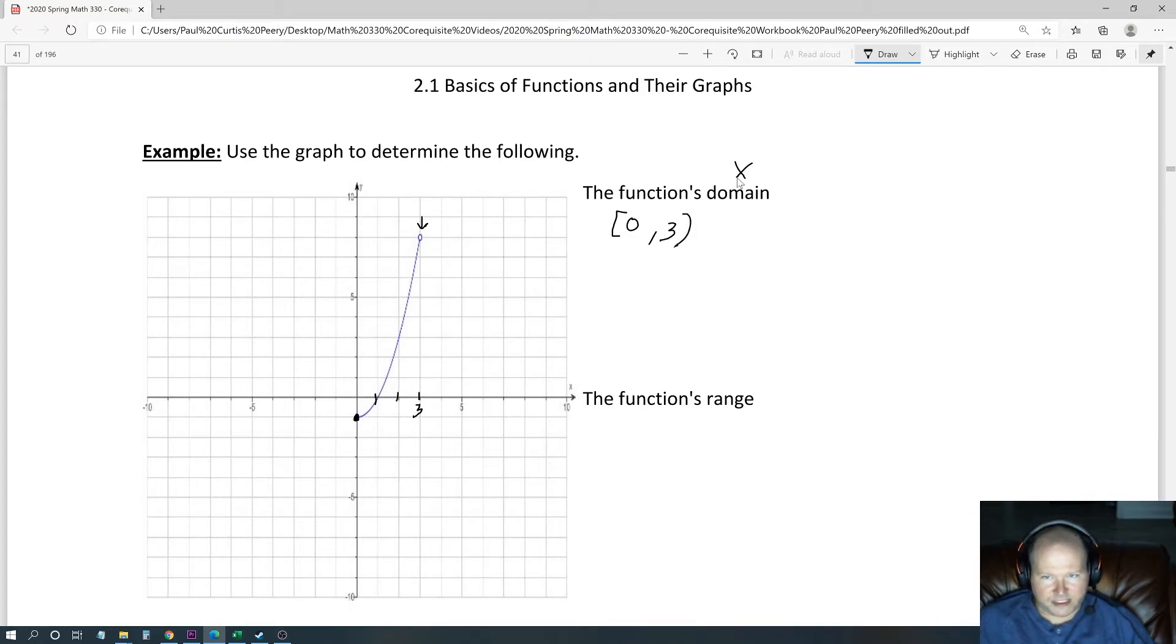So we're going to use a parenthesis. It does not include 3. There's a circle there, which means it does not include that point. There's a hole.